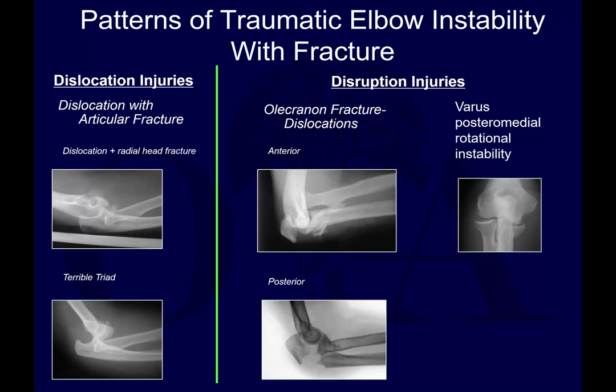Patterns of traumatic elbow instability with fractures can be categorized as dislocation injuries with substantial ligament injury, and disruption injuries where some ligaments remain intact and the ulno-humeral relationship is maintained. However, with a bad posterolateral rotational instability, the elbow can end up fairly subluxed if that injury is missed, as shown in the case from the second video.